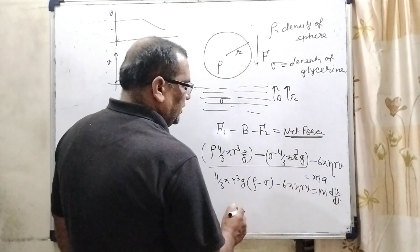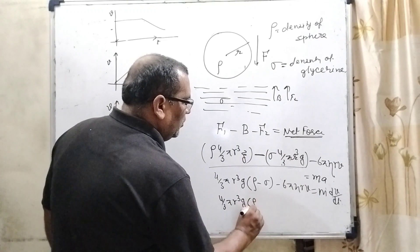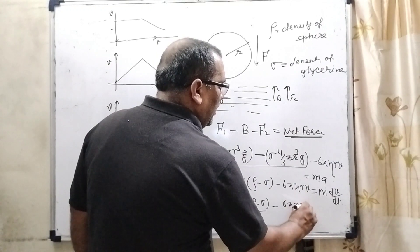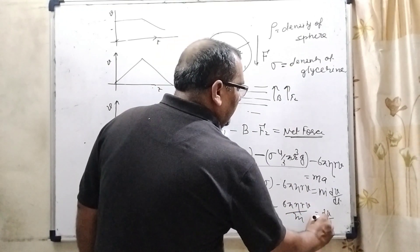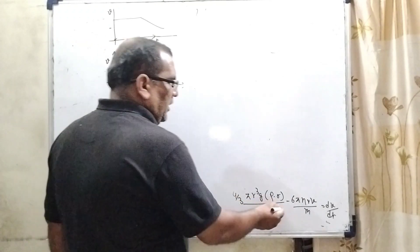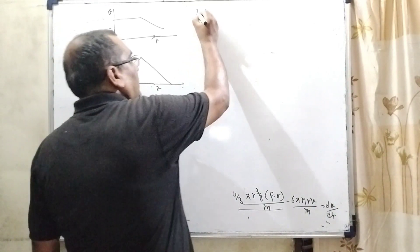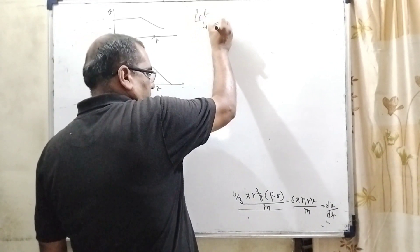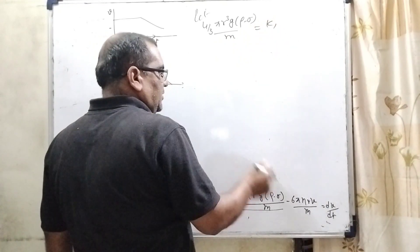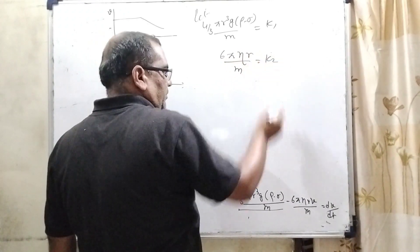Now, this M is transposing and it can be written as 4 by 3 pi R cube G rho minus sigma upon M minus. M is constant. So, here let consider 4 by 3 pi R cube G.